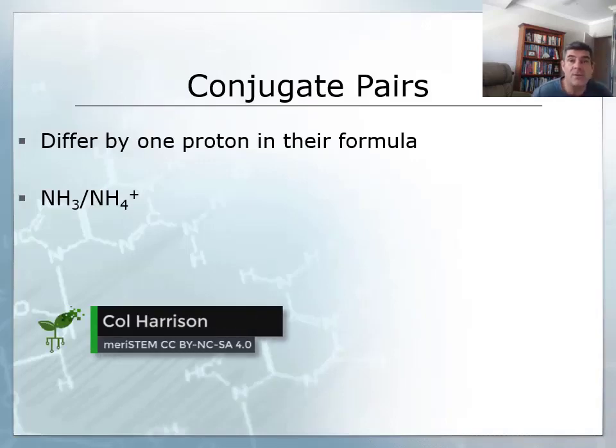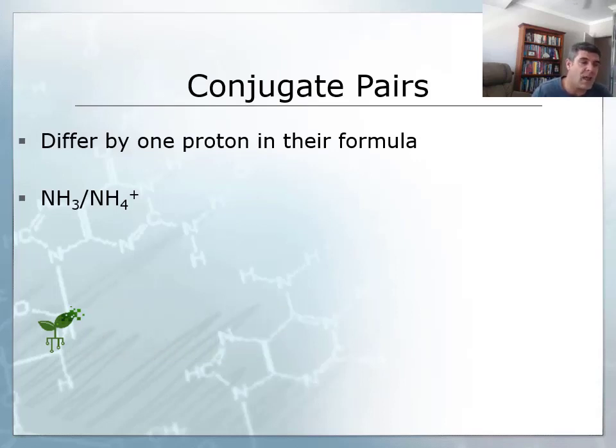One of the things that's very important as a consequence of the Bronsted-Lowry definition of acids and bases is that we can identify conjugate pairs. Now, conjugate pairs are acid-base pairs that just differ by one proton in their formula.